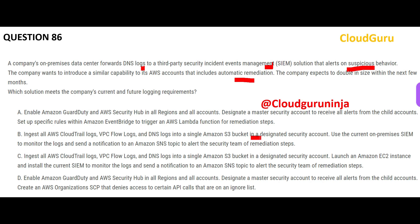Option B is wrong because it tells you to get all logs into an S3 bucket and then use the existing on-premises SIEM to monitor those logs — that is not a comprehensive solution. AWS is testing your knowledge of its own services. Option C is also wrong because it puts the SIEM on an EC2 instance rather than using the right AWS-native services. The right solution is to enable GuardDuty and Security Hub.